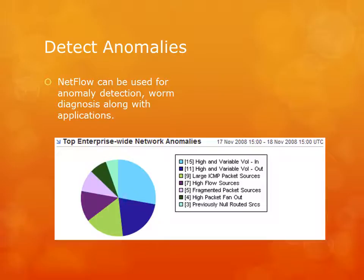At this point I would drill into the high flow sources and see a report showing the flow count for IP addresses with the highest flow sources and the confidence interval that Anomaly Detector calculated.